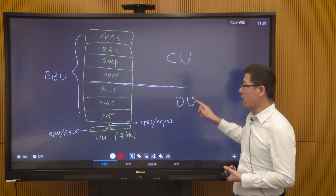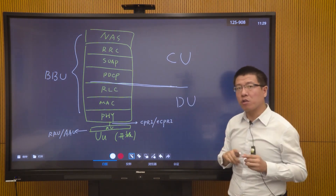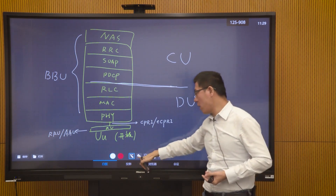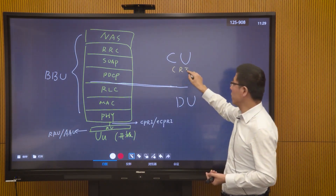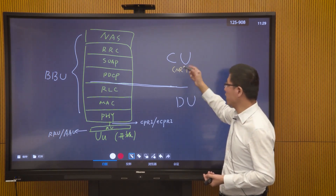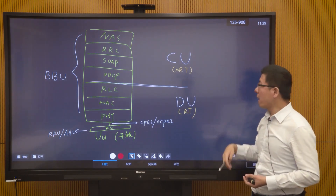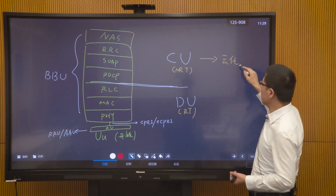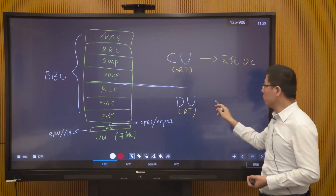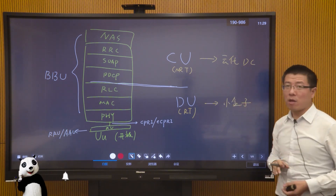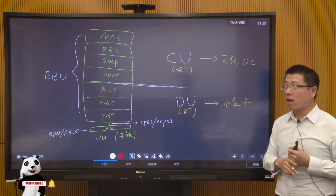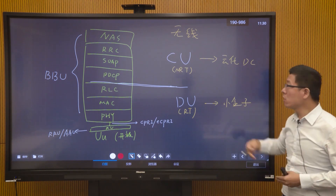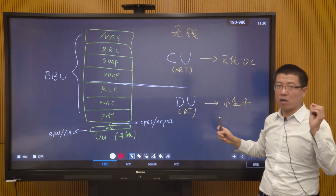The closer to the bottom of the stack, the higher the real-time data requirements; the upper layers have lower real-time requirements for data processing. So we divide it this way: splitting into a part that needs real-time processing and a part that does not. The CU part, which handles non-real-time processing, can be deployed using cloud deployment in a data center. The DU part will become small boxes that can be deployed wherever coverage is needed. This is the CU and DU split: the centralized unit handles lower real-time data, and the DU mainly processes higher real-time data.